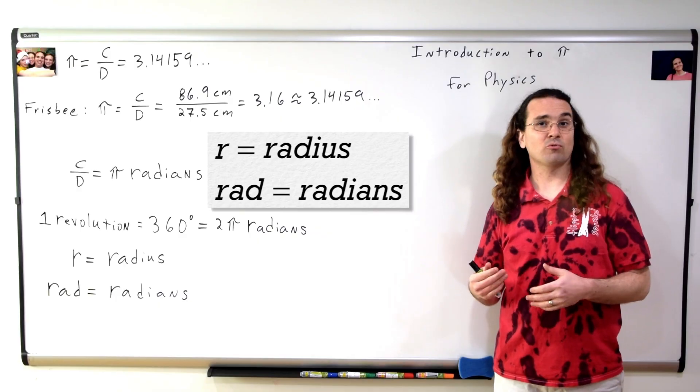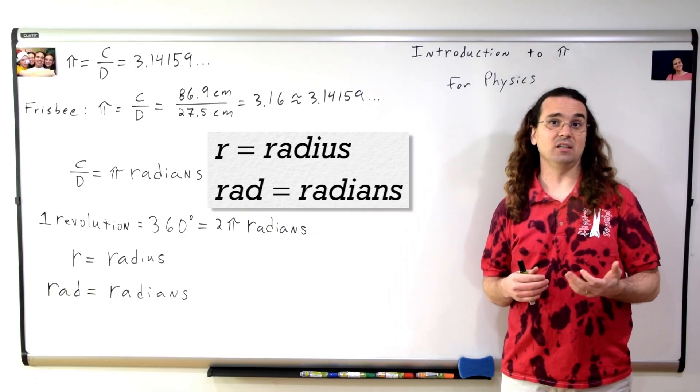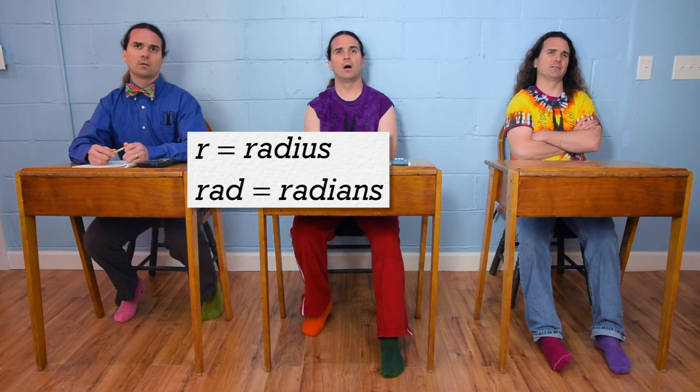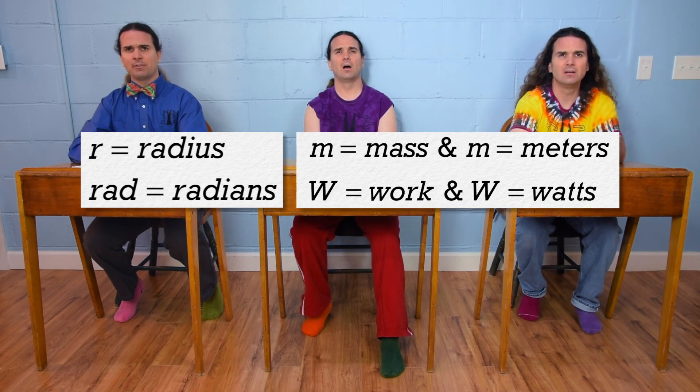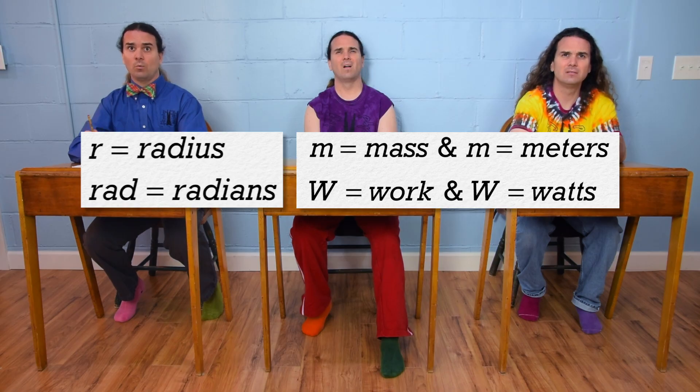We cannot use R for radians because R is for radius. Therefore, we use the three letters R, A, D for radians. Mr. P, but we use M for mass and M for meters. And W for work and W for watts.